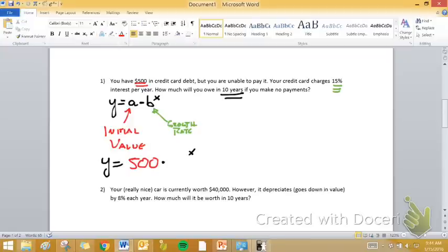Now here's where it's a little tricky to find that growth rate for these problems. For this 15% right here, that's how much our value is changing by. It's increasing by 15% each time. Each year, the amount we owe is going to be 15% higher than the year before it.